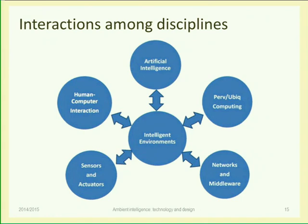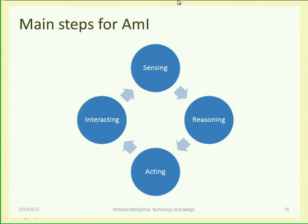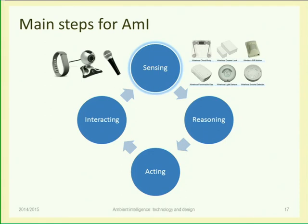This is how I like to see an ambient intelligence system: a loop, a cycle of four main steps — sensing, reasoning, acting, and interacting. The system should be able to sense that something is happening in the environment or about the user. Sensing means having sensors: sensors of presence, temperature, humidity, lighting, CO2, pollutants, presence of persons, the identity of persons, actions, movements. It's not a technology problem — if you need information about the environment, you will find the sensor for it.